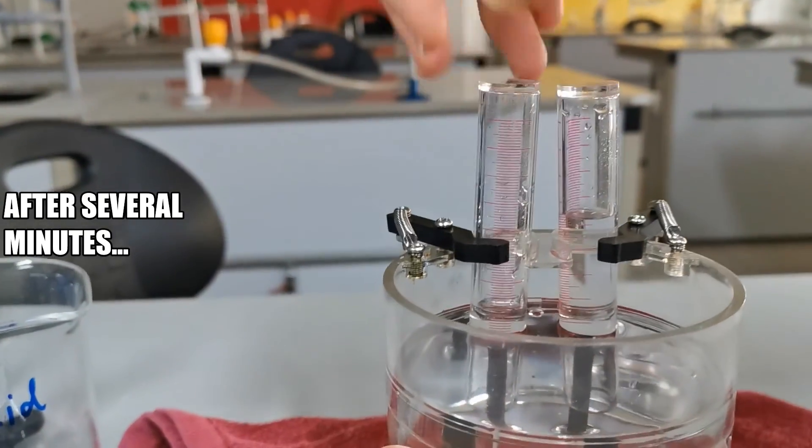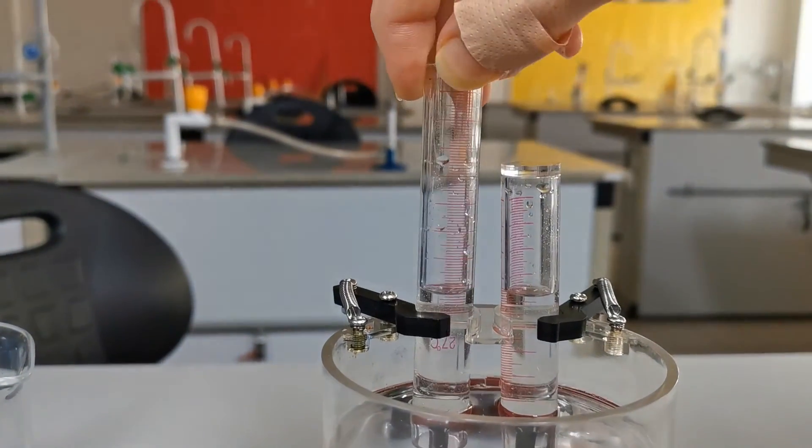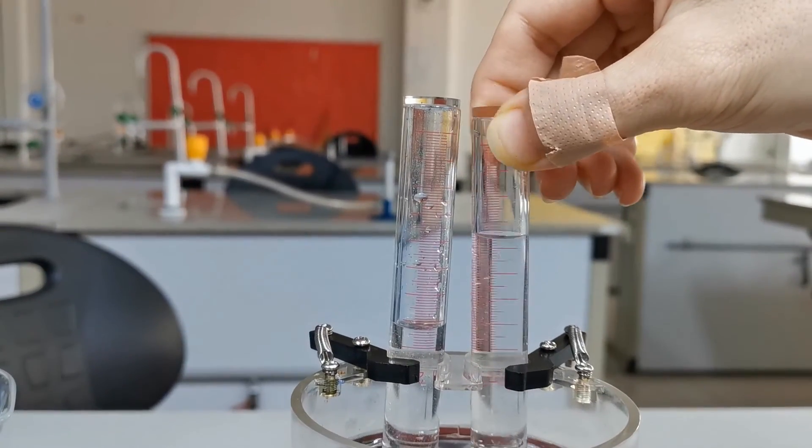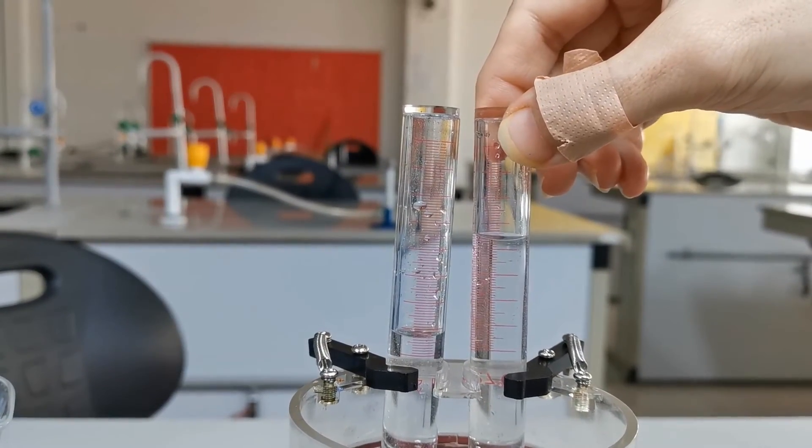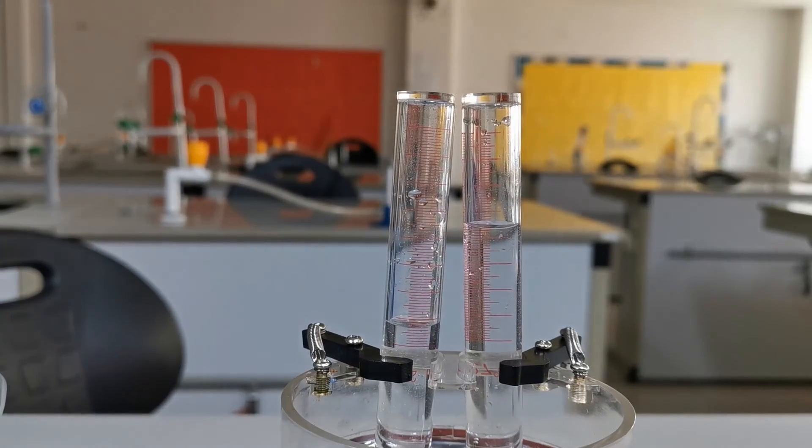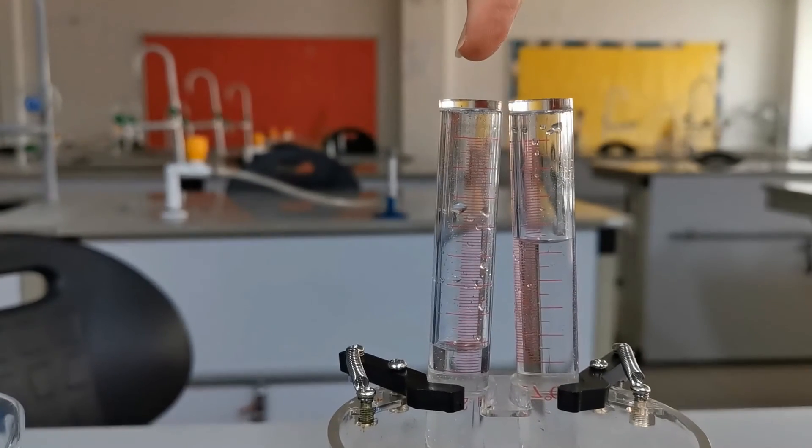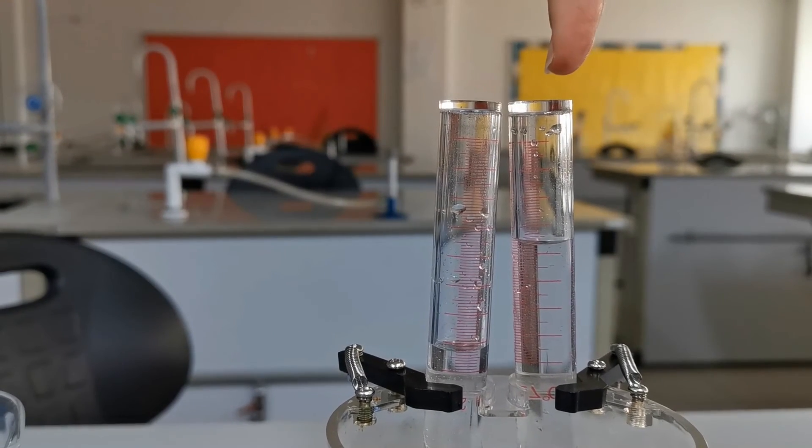As you can see, the volume of gas produced on the cathode is around twice the volume of gas produced on the anode. So this is hydrogen and this is oxygen.